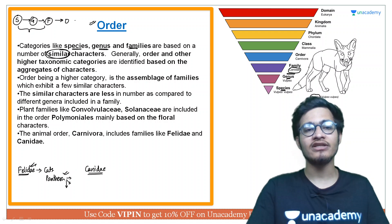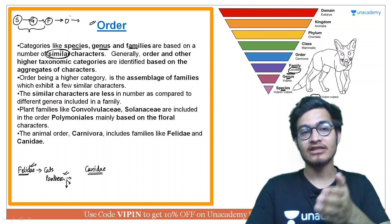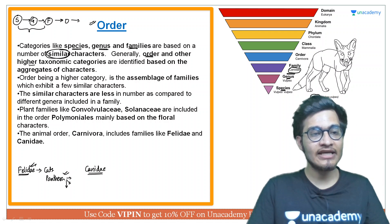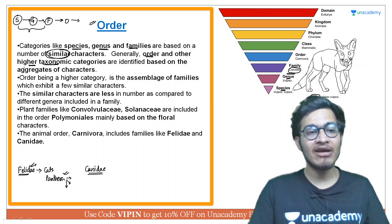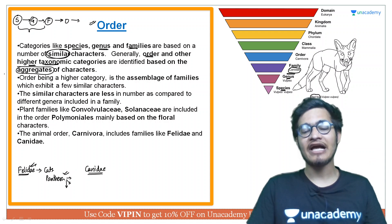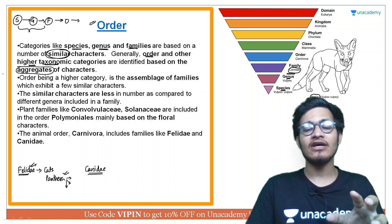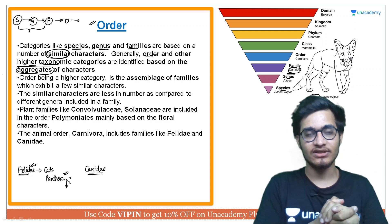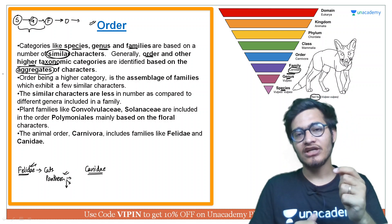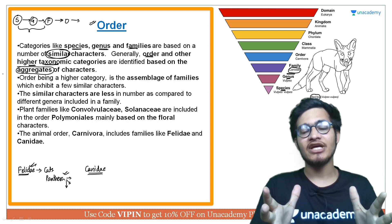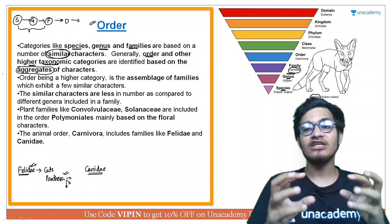But as you move from family towards order, and further beyond order, what you find is that order and higher taxonomical categories are identified based on an aggregate of characters. Here you do not look at specific common characters; instead you form an aggregate. In aggregate, you observe several characters overall and decide — you don't pick just one specific character, because that level of similarity is not possible. You don't rely on genetic combination or number of bones alone; you look at a lump-sum aggregate.